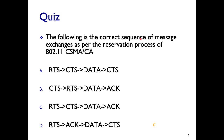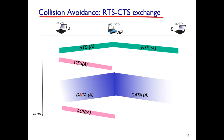Quiz: Which sequence is correct when using CSMA/CA with RTS and CTS? Option A: RTS, CTS, data, CTS. Option B: CTS then RTS. Option C: RTS, CTS, data, acknowledgement. Option D: RTS, acknowledgement, then data. Options A, B, and D don't make sense — you never send CTS first, and acknowledgement always comes after data. The correct answer is C: RTS first, then CTS, then data, then acknowledgement.